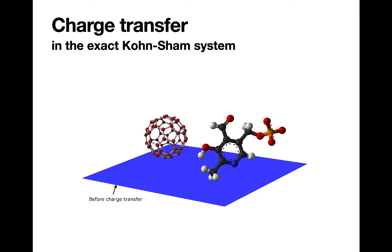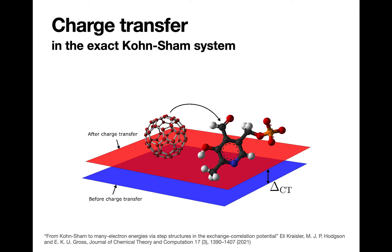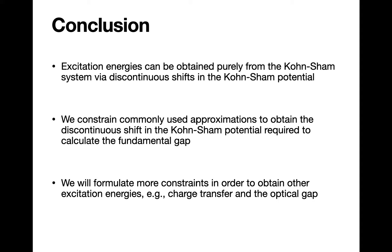There are other shifts that occur in the Kunsham potential upon uncharged excitation. For example, one can obtain the optical gap via the shift in the Kunsham potential when an electron is excited from the HOMO to the LUMO. Here we have a donor-acceptor complex. When the system is excited, an electron is transferred from the donor to the acceptor. We demonstrated that within the exact Kunsham system, regardless of the complexity of the system, upon the infinitesimal transfer of charge, the Kunsham potential experiences a discontinuous shift by a constant delta_CT. This constant shift relates the Kunsham charge transfer energy to the many-body charge transfer energy. Note that delta_CT can be calculated from the constrained potential, like the fundamental gap, and therefore a single Kunsham calculation is all that is needed.